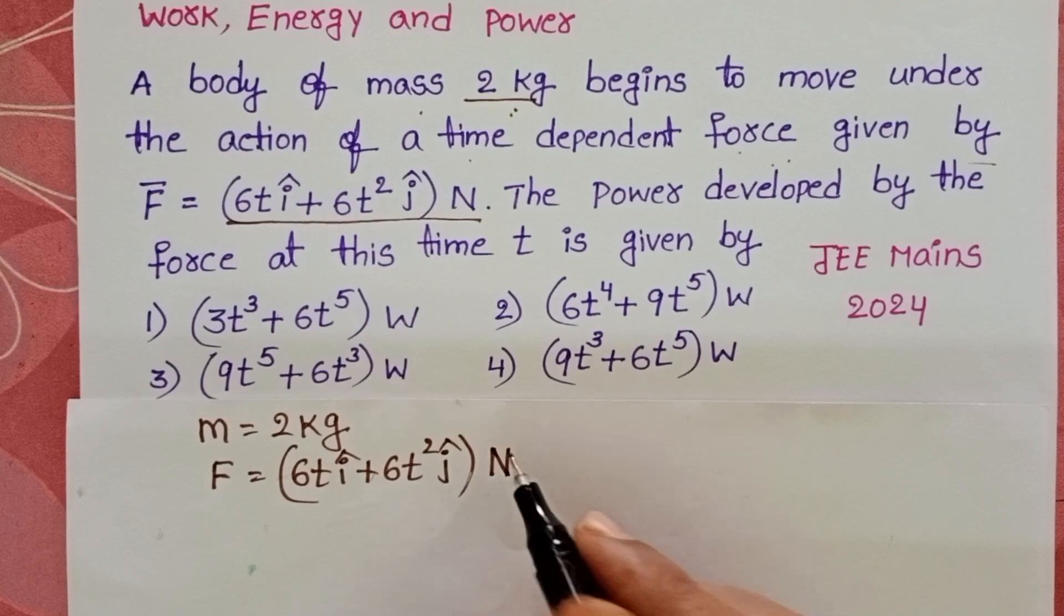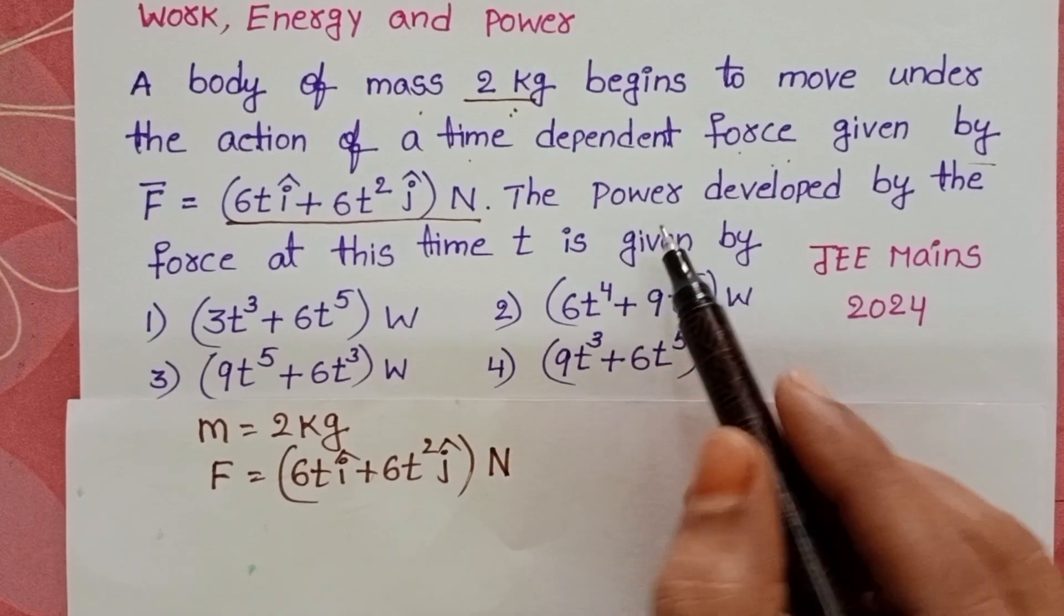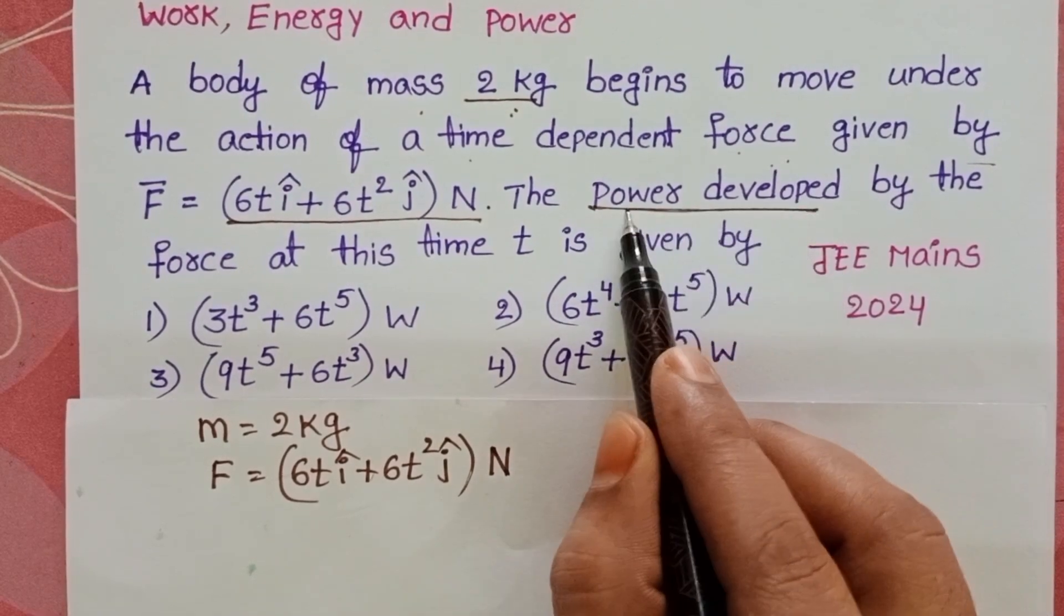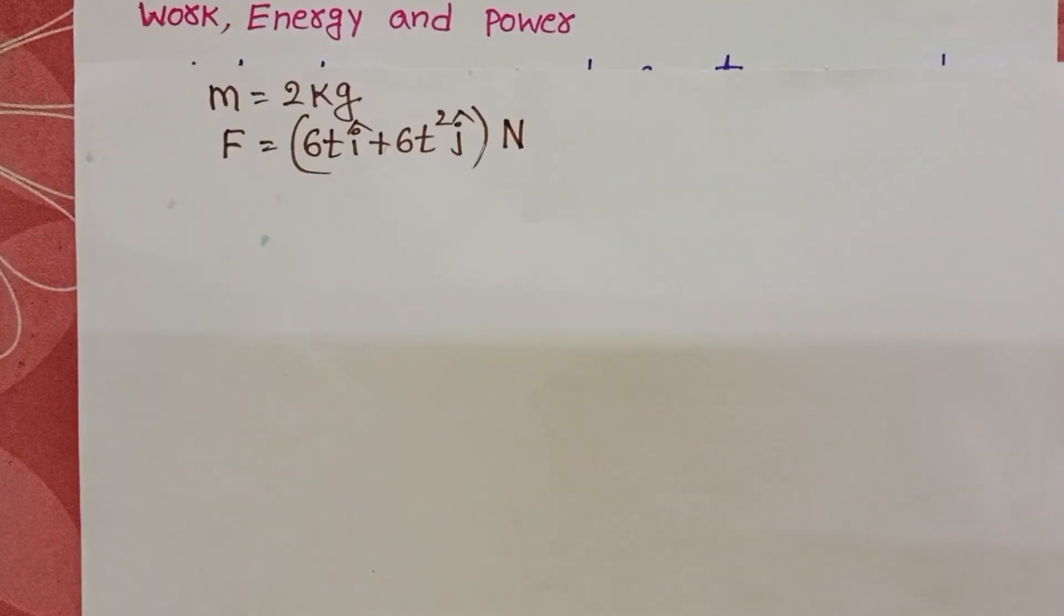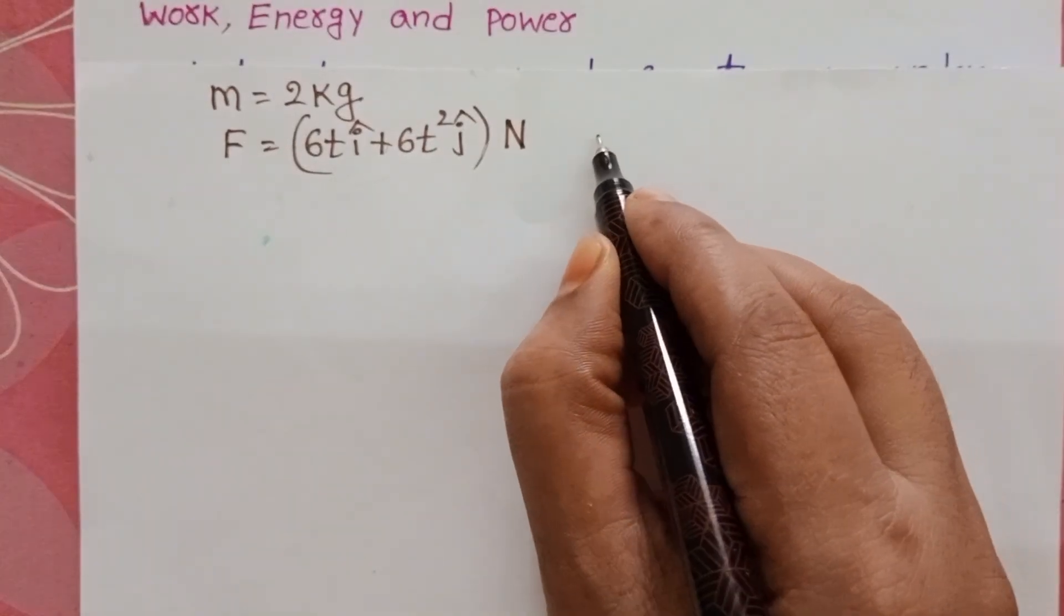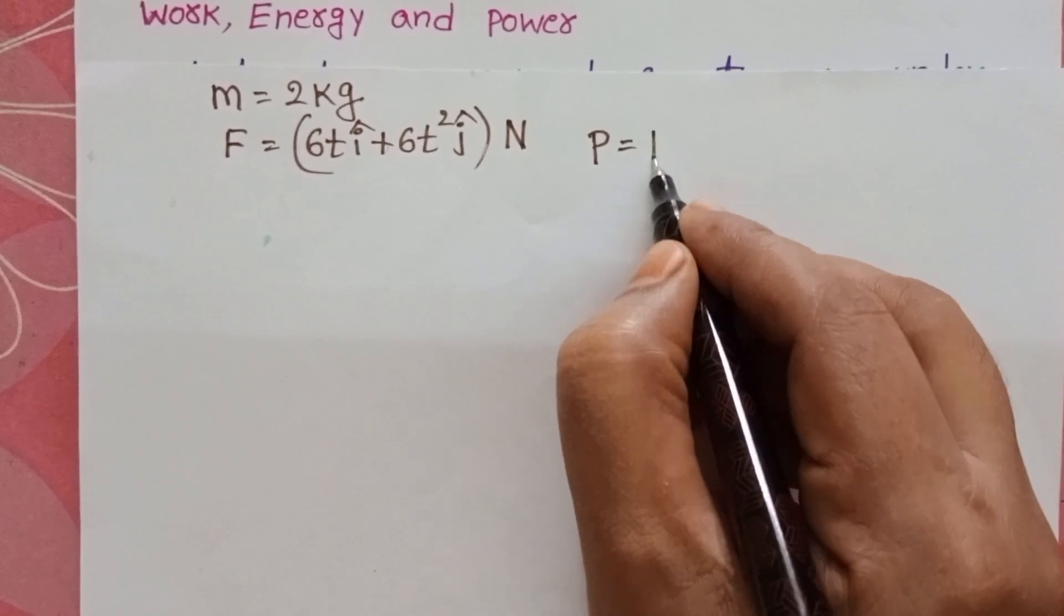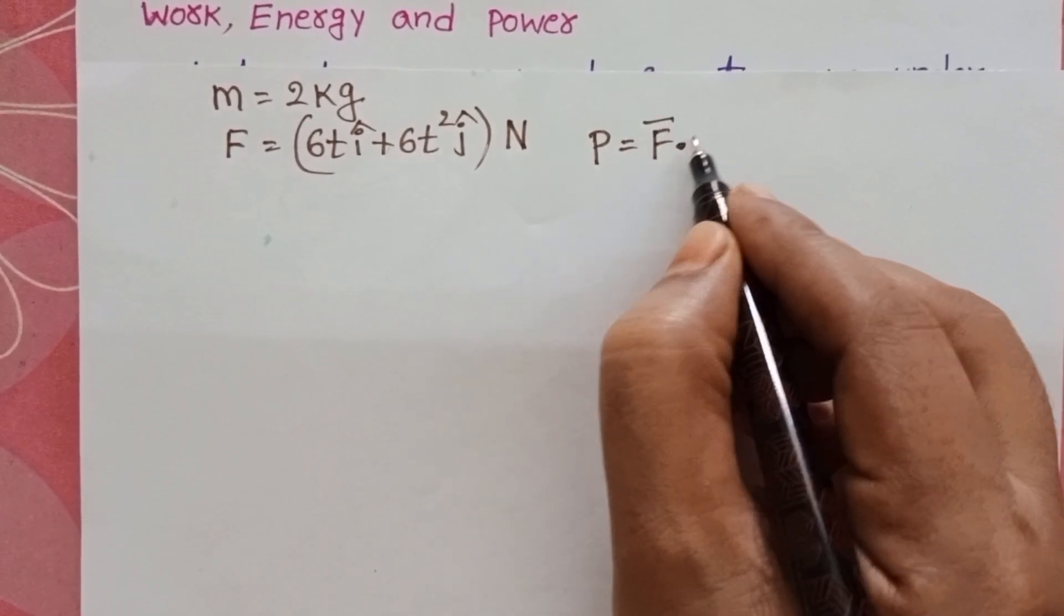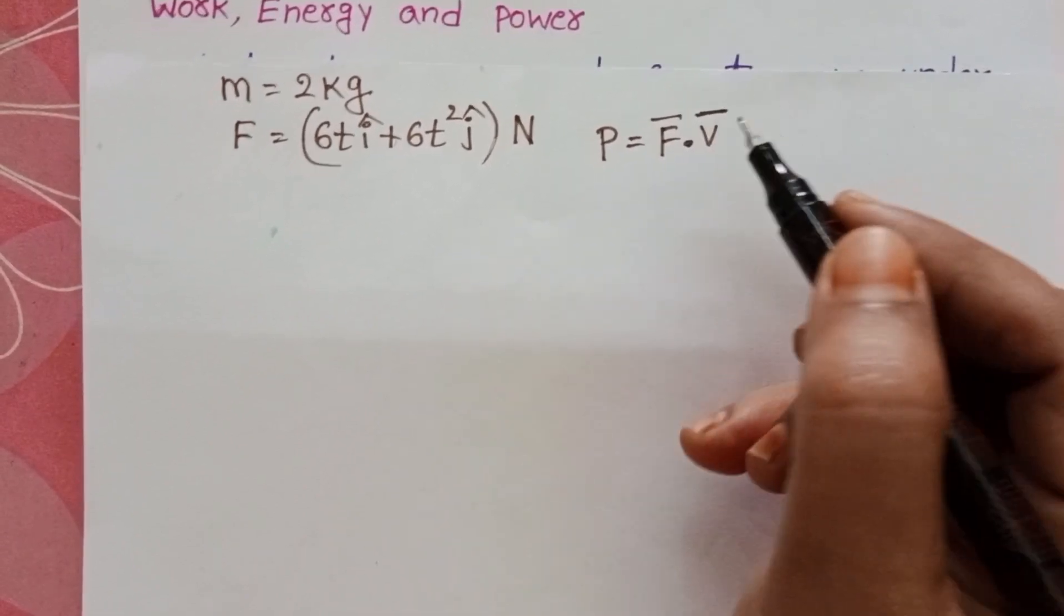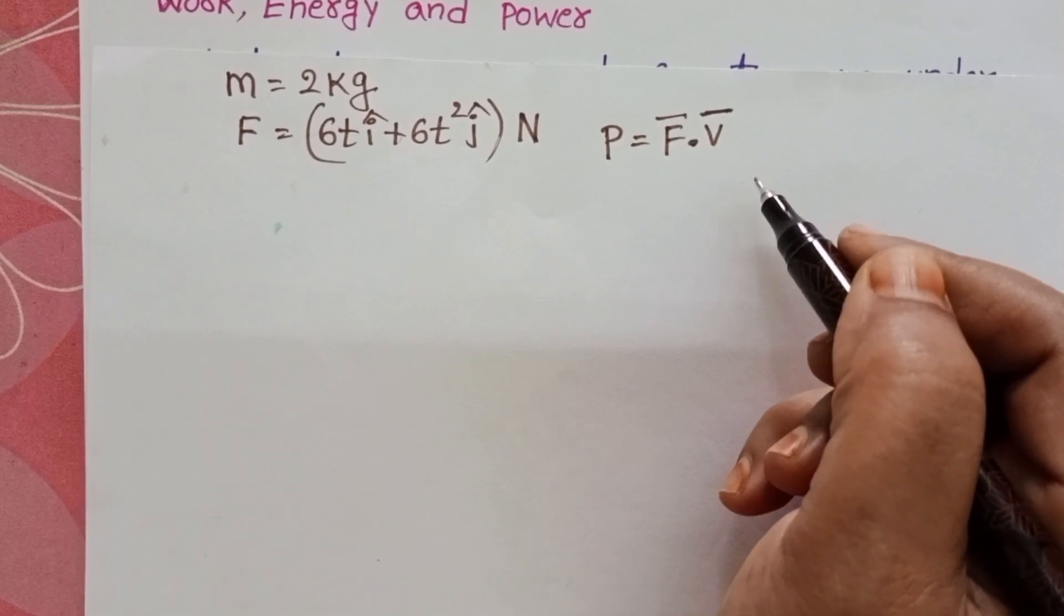Using this information, we have to find the power developed by the force. We know in vector representation, the power formula is P equals F dot V. But here we don't know the velocity of the body.